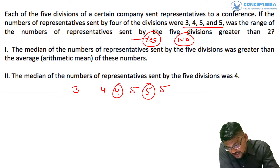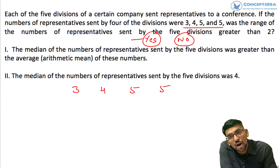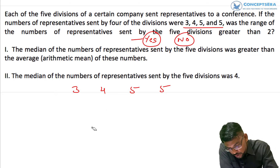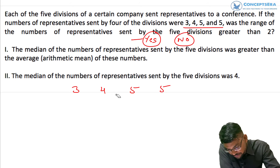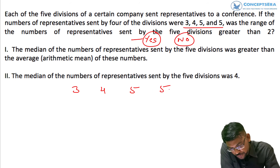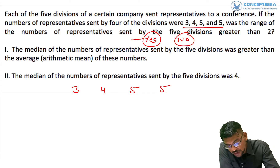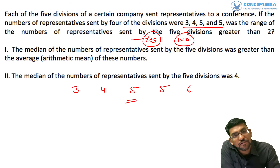When x is 3 or less than 3, the median has to be 4. When x is 4, the median is also 4. If x is 5, then the median has to be 5. And when x is more than 5, the median is also 5.